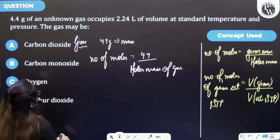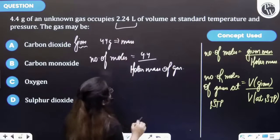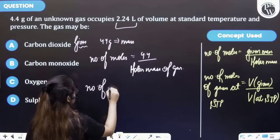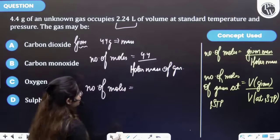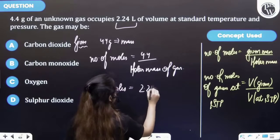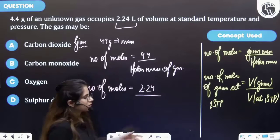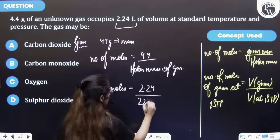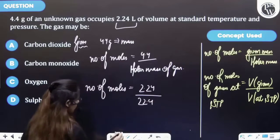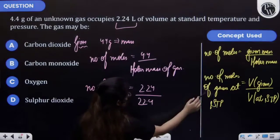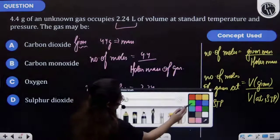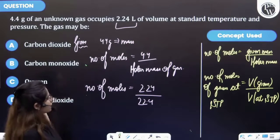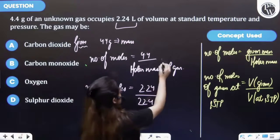So number of moles is equal to 2.24 liters, and volume at STP is equal to 22.4 liters. Now you will see one thing over here: this is number of moles and this is also number of moles. So we can equate these equations.